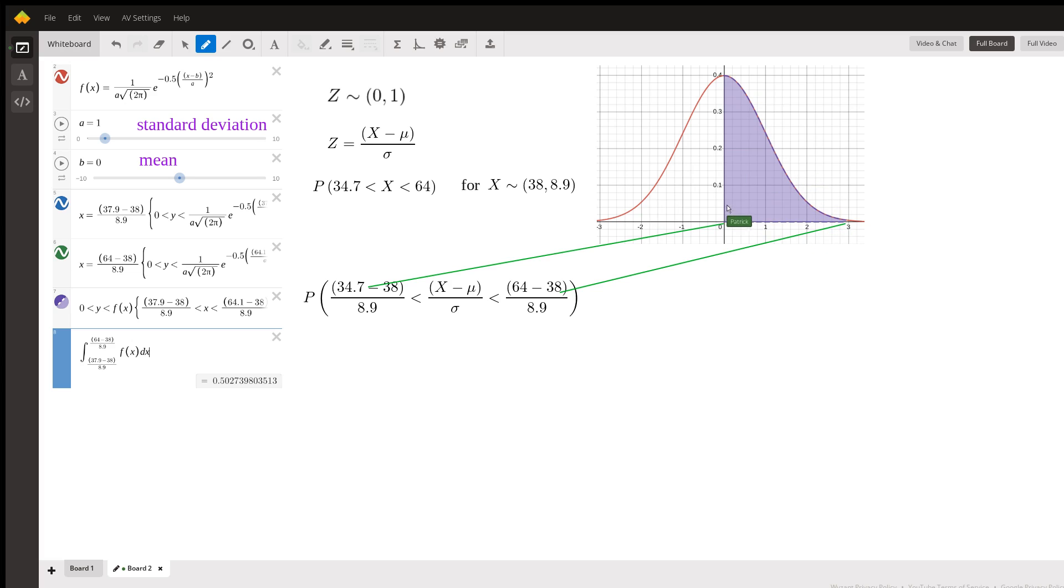This is standard normal with mean zero, standard deviation one. Now if we have our distribution here, we can convert it into a standard normal by doing this: we subtract the mean and divide by the standard deviation.